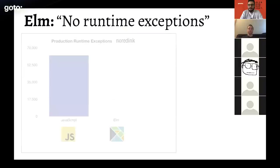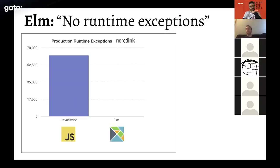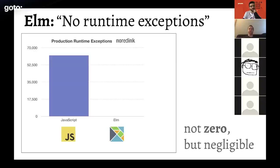To be concrete: at No Red Ink, going back to 2015 when we started using Elm, we have a logging service that detects runtime exceptions in the browser. There have been tens of thousands from our legacy JavaScript code. Our Elm code — it's not literally zero, but it's zero pixels on the graph because the number of times it's happened in five years is so low it's not visible. We simply don't think about our Elm code crashing at runtime.